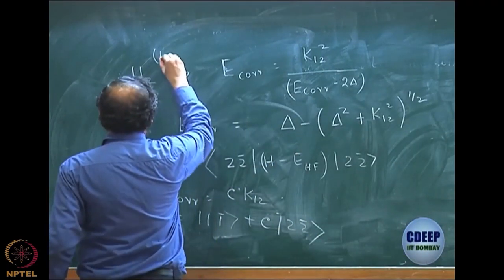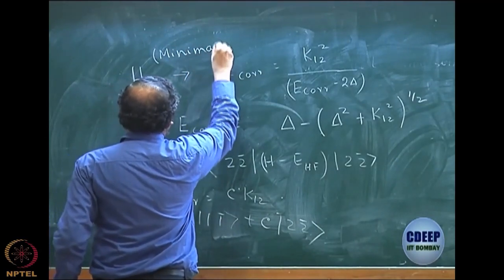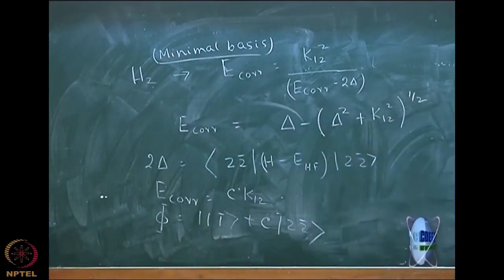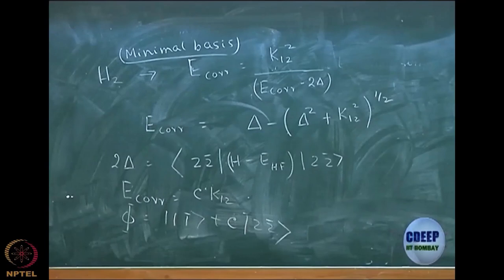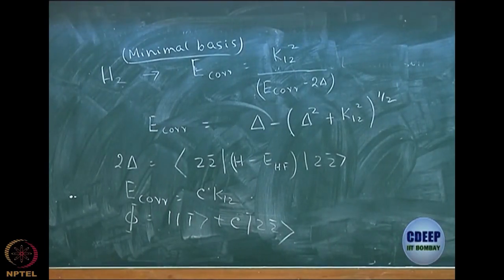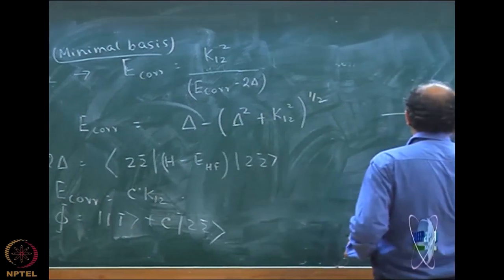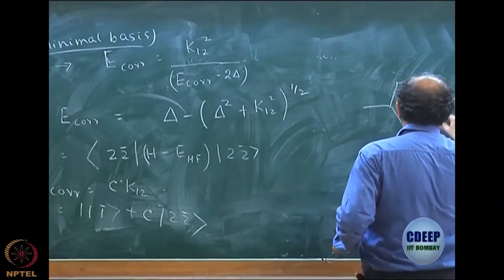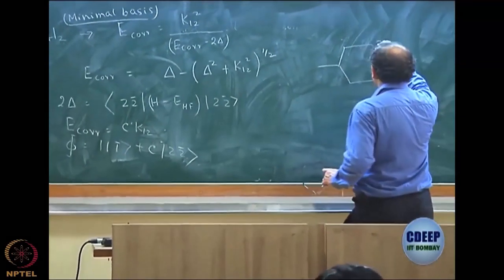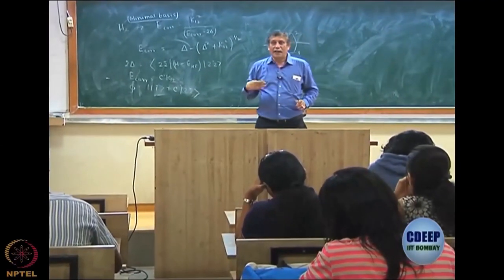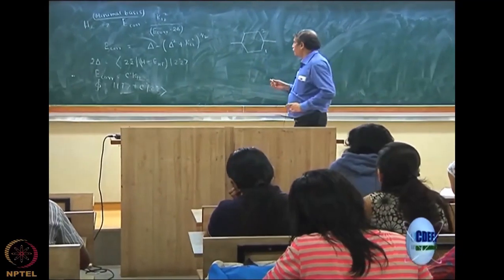Note again, what we are discussing is the hydrogen molecule in minimal basis. Minimal basis means there are only 2 orbitals — σ_g and σ_u. When you do MO theory, you have 1s_A and 1s_B, 2 atomic orbitals, LCAO, which gives you σ_g and σ_u. So you have 2 atomic orbitals to start with, you do a Hartree-Fock, you get 2 molecular orbitals. So orbital 1 is σ_g (bonding) and orbital 2 is σ_u (anti-bonding).